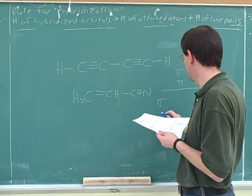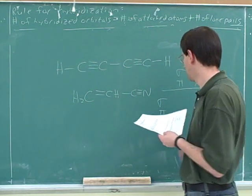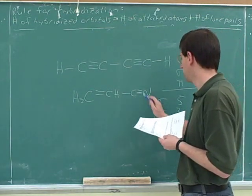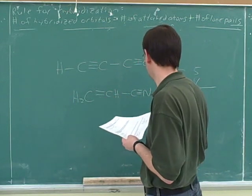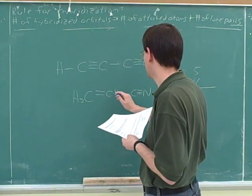How many sigma and pi bonds here? Five sigma and three. Three, five. One, two, three. One, two, three, four.